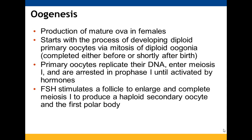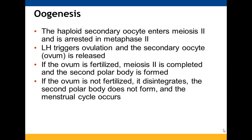FSH will stimulate a follicle to enlarge and complete meiosis I, resulting in a haploid secondary oocyte and a first polar body. That secondary oocyte is arrested at metaphase II. A luteinizing hormone then triggers ovulation and the secondary oocyte is released. If the ovum is fertilized, meiosis II is completed and a second polar body is formed. If not, it disintegrates — there is no second polar body and the menstrual cycle takes place.